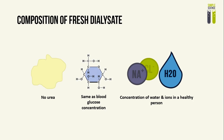To expand on this, fresh dialysate has no urea, which allows diffusion of urea from the patient's blood to the dialysate, thus removing the urea from the blood. The fresh dialysate also has the same concentration of glucose as the blood glucose concentration, so that no glucose diffuses across, since glucose is very important for respiration and we don't want any of it to be removed from the patient's blood.